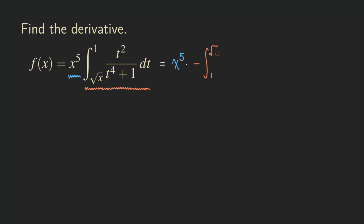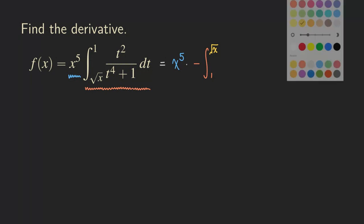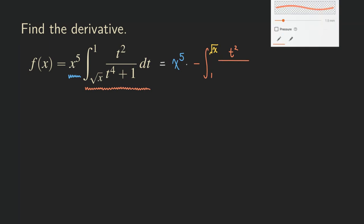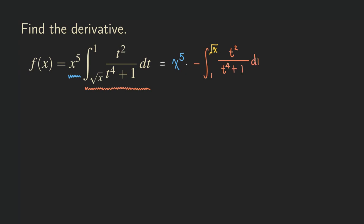The square root of x is being considered as the inner function of this composite function. The whole outer function is that integral, with t to the fourth plus one and dt. Because we have two operations stacked together, it's a good idea to put brackets around this integral. Now you can see that's the product of two functions, and it is in the right form. We can start taking the derivative of this whole function, and don't forget we need to apply the product rule.